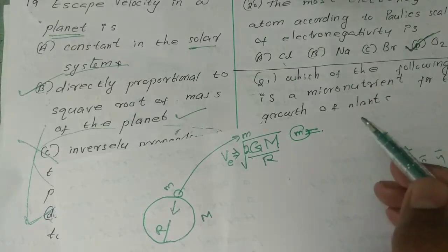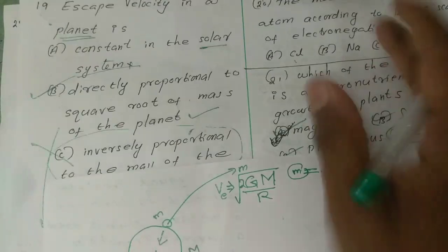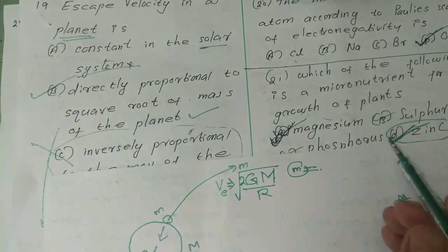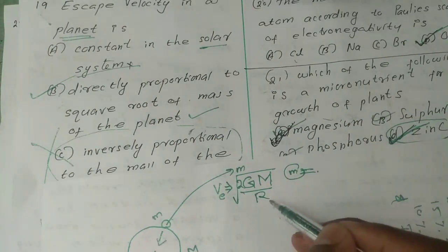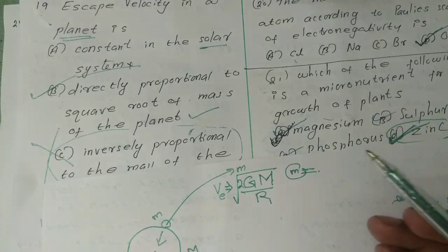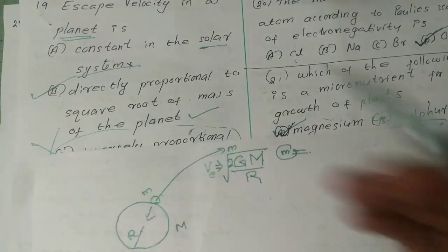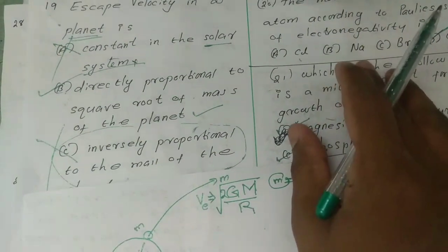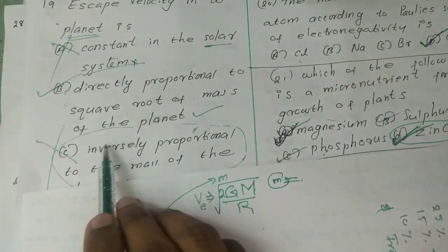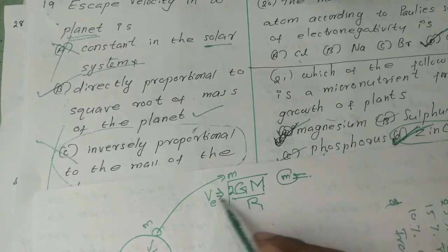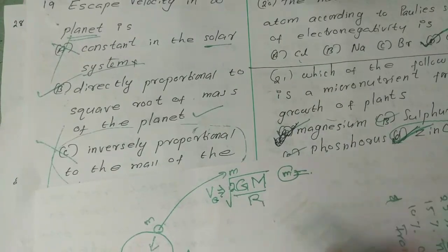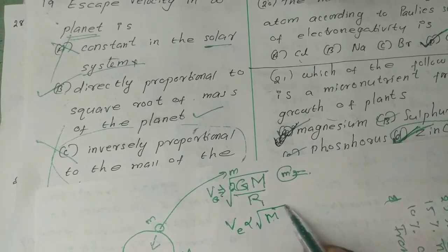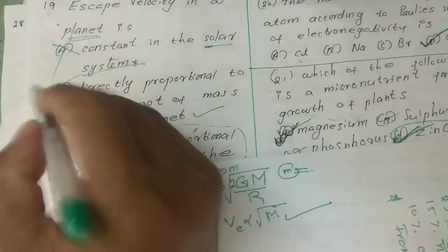Due to gravitational force of attraction. Option A, constant in the solar system — this is the escape velocity. The second option is directly proportional to square root of the mass of the planet.